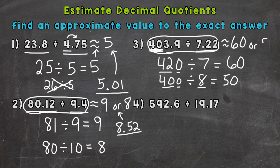So our two estimates are 60 or 50. The exact answer to number three, rounded to the hundredths place, is 55.94 — right in between our estimates. Both were very close to the exact answer. The estimate of 60 is slightly closer, which shows that the closer you round to the original problem, the better your estimate will be. But both are good estimates.